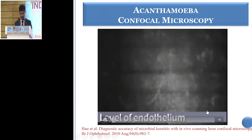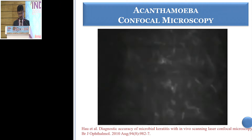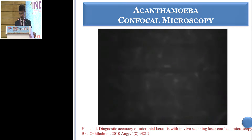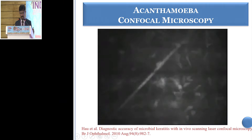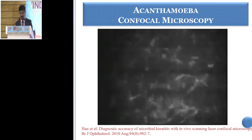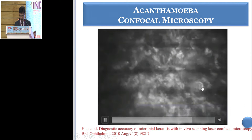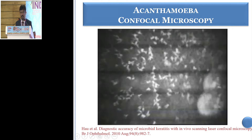In confocal microscopy, we start from the level of the endothelium and come forward. As we come forward, we get to see thickened, inflamed nerves — and that is the reason for the perineural infiltrate and severe pain. Then double-walled cysts can be seen, followed by refractile trophozoites seen at the basal epithelium of the cornea.